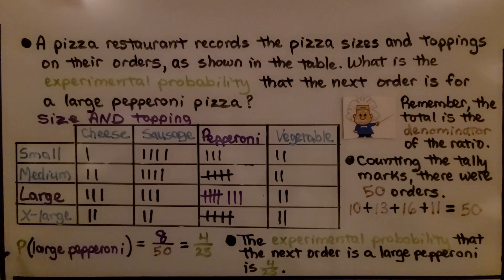The experimental probability of the next order being a large pepperoni is 8/50. We can simplify it to 4/25. So the experimental probability that the next order is a large pepperoni is 4/25.